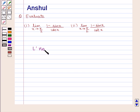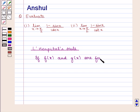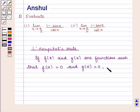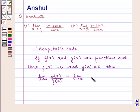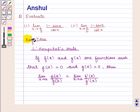L'Hôpital's rule states that if f(x) and g(x) are two functions such that f(a) is equal to 0 and g(a) is equal to 0, then limit x tends to a of f(x) upon g(x) is equal to limit x tends to a of f'(x) by g'(x). With this key idea we shall proceed with the solution.